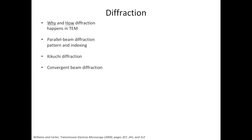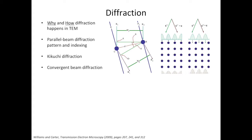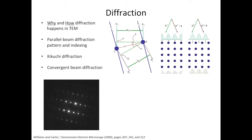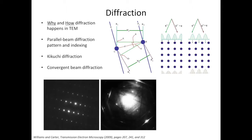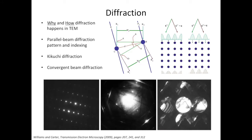The second section is on electron diffraction. We'll talk about why and how diffraction happens in TEM, then discuss parallel beam diffraction and indexing, Kikuchi diffraction, and convergent beam diffraction. In parallel beam diffraction you see spots, in Kikuchi diffraction you see lines, and in convergent beam electron diffraction you see disks.